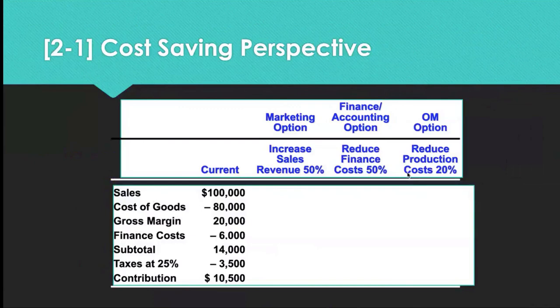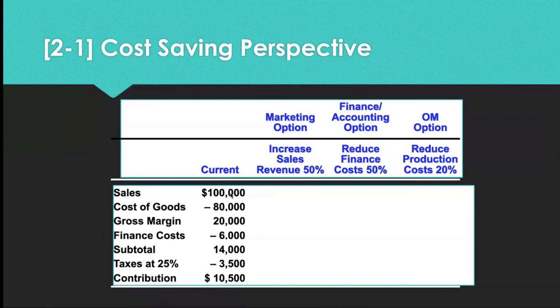Let's look at a business case from a cost saving perspective. Currently, a business makes $100,000 in sales. Cost of goods is $80,000, giving a gross margin of $20,000. Finance costs such as borrowing and insurance are $6,000, leaving a stock total of $14,000. After paying taxes at 25%, the remaining contribution margin is $10,500. Now consider three scenarios: marketing option, finance/accounting option, and operations management option.